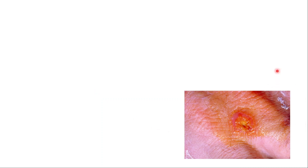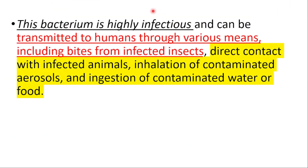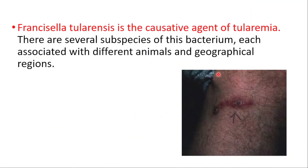Today we will talk about tularemia. Tularemia, also known as rabbit fever or deer fly fever, is a rare infectious disease caused by the bacterium Francisella tularensis. This bacterium is highly infectious and can be transmitted to humans through various means. There are several subspecies of this bacterium, each associated with different animals and geographical regions.